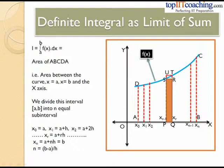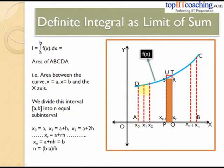Now we have seen what a definite integral is, but what does it physically represent? Let I equal the integral of f(x) dx from a to b. This equals the area of the region A, B, C, D — that is, the area between the curve φ equal to f(x), the line x equal to a, the line x equal to b, and the x-axis. So physically, the definite integral of f(x) dx from a to b denotes the area between the curve, the lines x equal to a and x equal to b, and the x-axis.